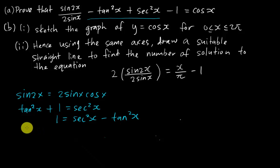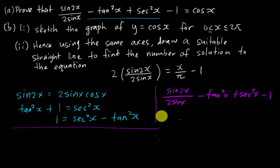So let's have a look. I say sin2x over 2sinx minus tan²x plus sec²x minus 1. At the end I must get cosx, isn't it? So sin2x is 2sinx cosx, it's just a formula, over 2sinx, and the whole thing over here will become positive 1 minus 1.